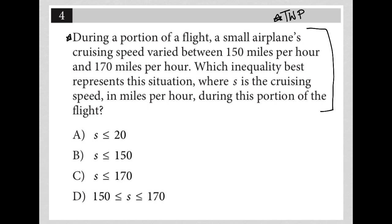So the first sentence here says during a portion of a flight, a small airplane's cruising speed varied between 150 miles per hour and 170 miles per hour.